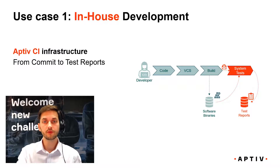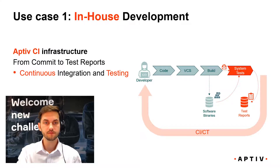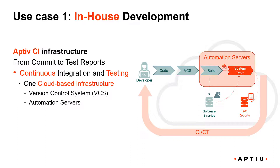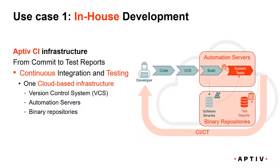At the end of the loop, we would also provide feedback back to the developer. In the cloud, we would have the version control system and the automation servers responsible for building the software and distributing system tests to the corresponding system test environments. We would have binary repositories containing artifacts from the different jobs, the requirement management system, and so on. In general, we have a set of platforms that the CI infrastructure consists of, carefully selected to work seamlessly throughout such a CI-CT flow. So in general, we are in control of our CI infrastructure.